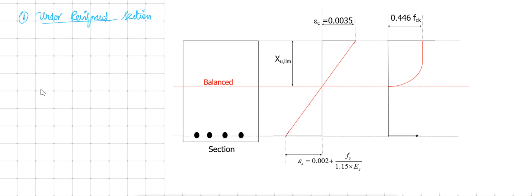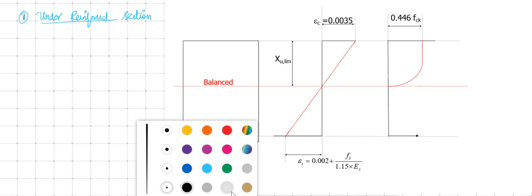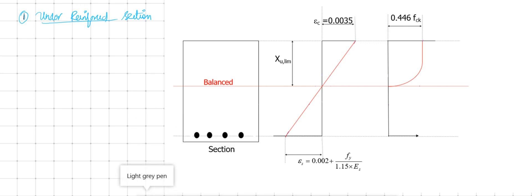When the area of steel is reduced such that A_st is less than A_st limit, the neutral axis will get shifted towards the compression side — that is, towards the upper side — because the area of tension steel has been reduced.